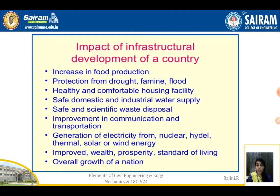Next is safe domestic and industrial water supply, which comes under irrigation engineering and environmental engineering. In environmental engineering, water purification is carried out — the pH values for drinking water and industrial usage water are different. Next is safe and scientific water disposal. The water coming out from industries and from houses should be separated, and this also comes under environmental engineering.